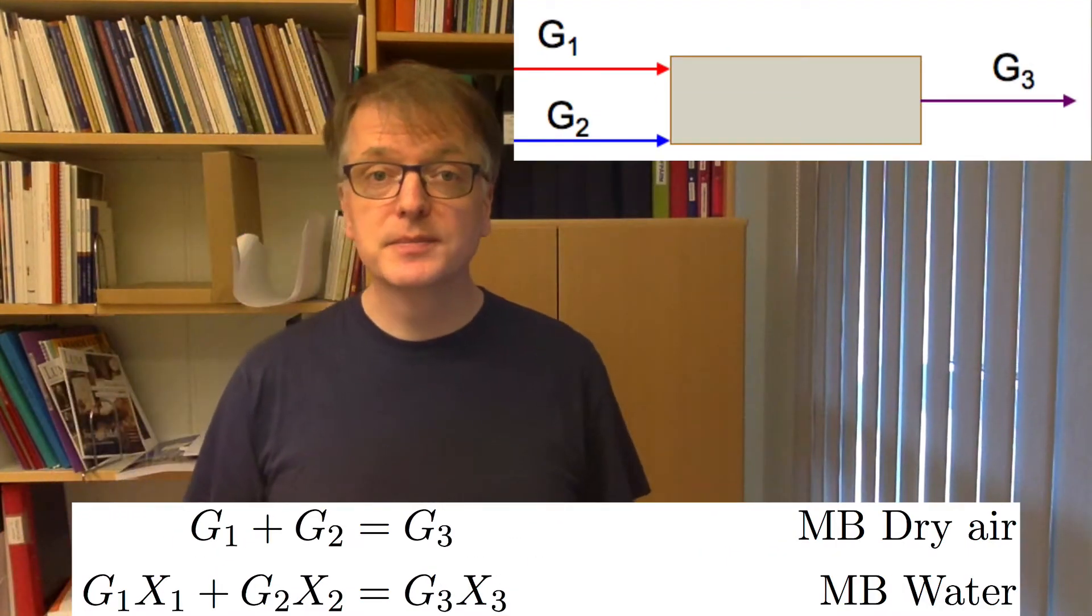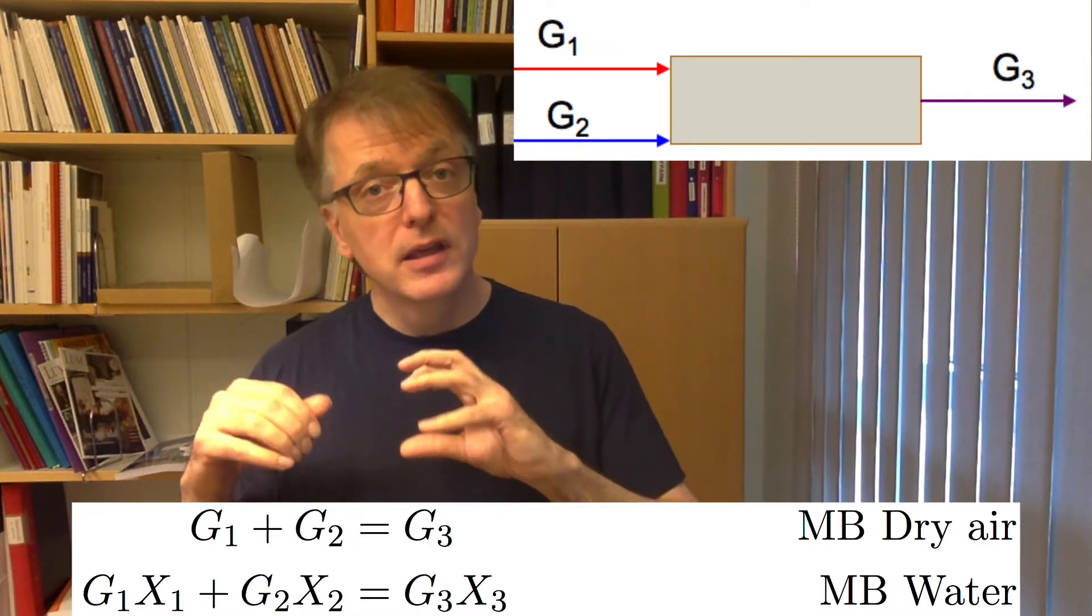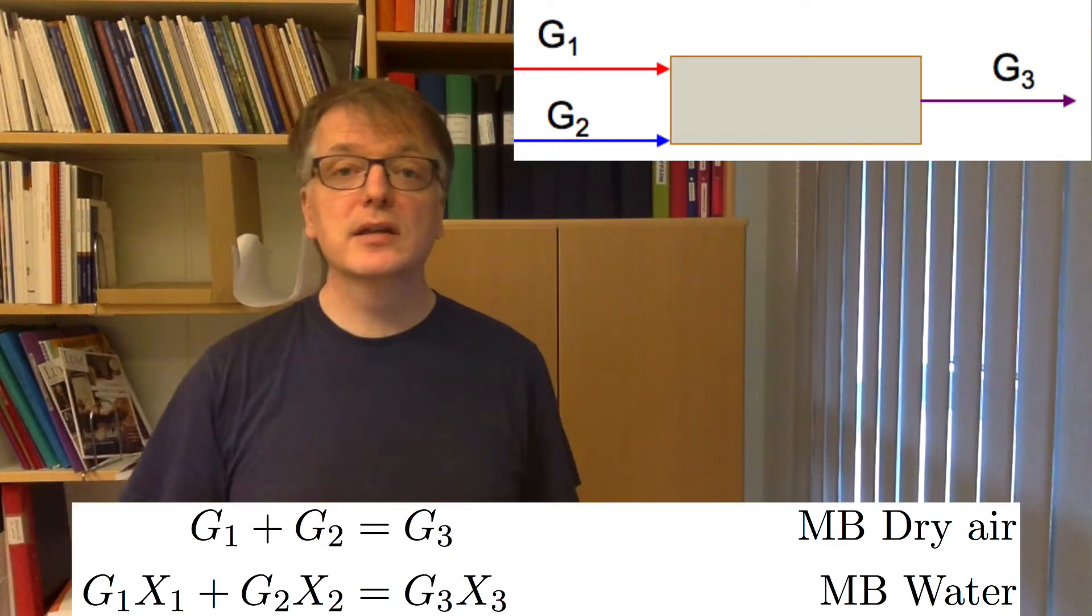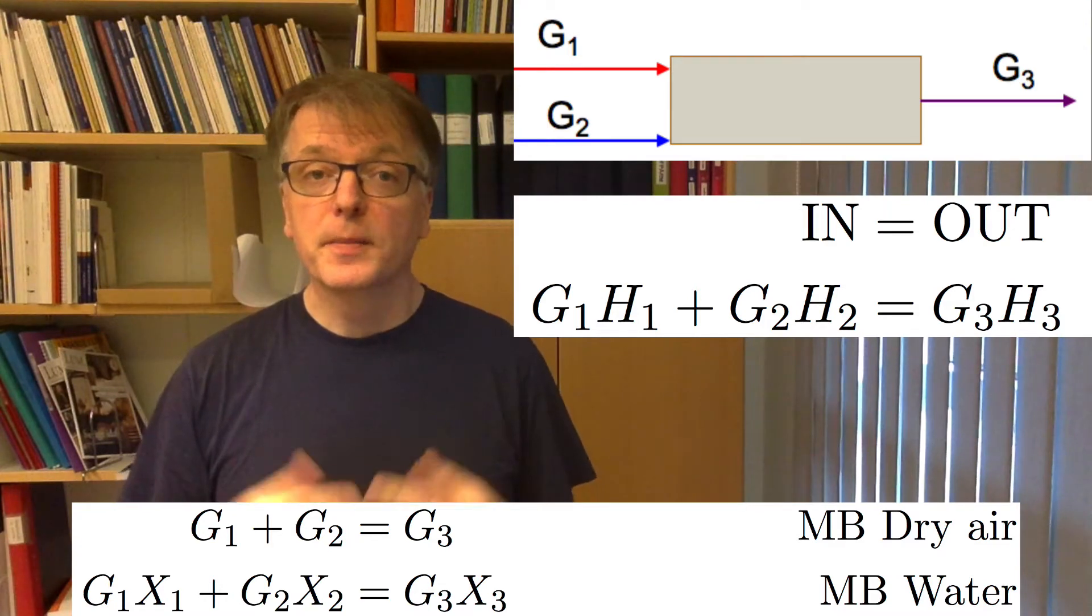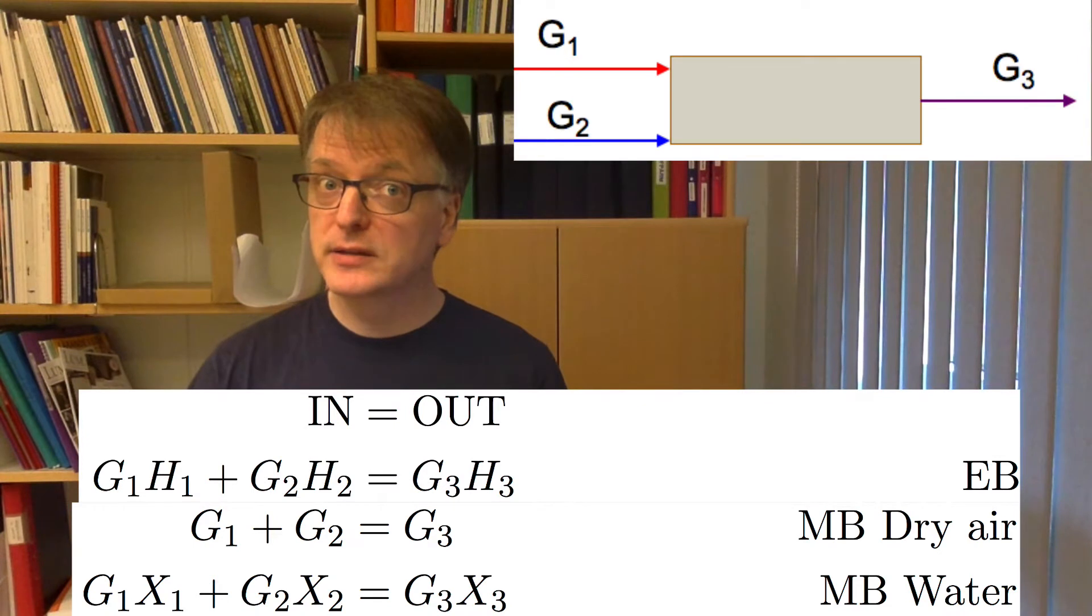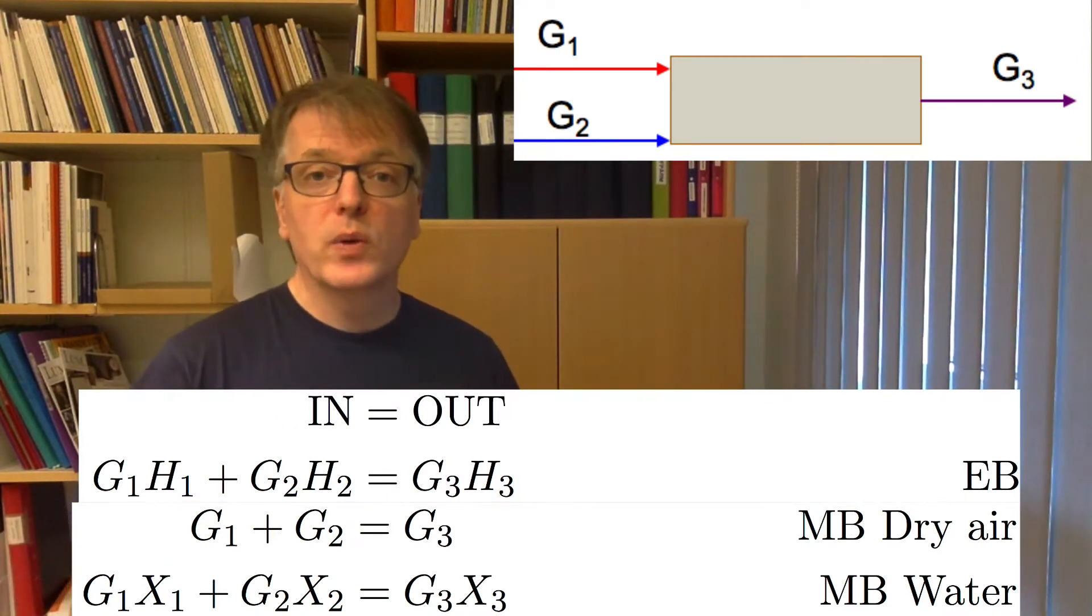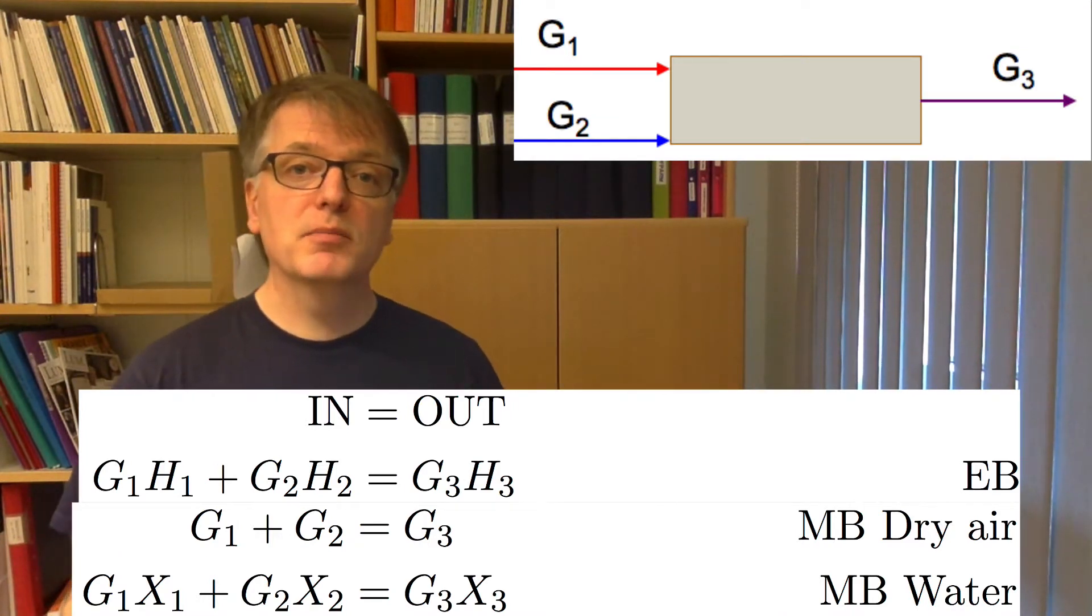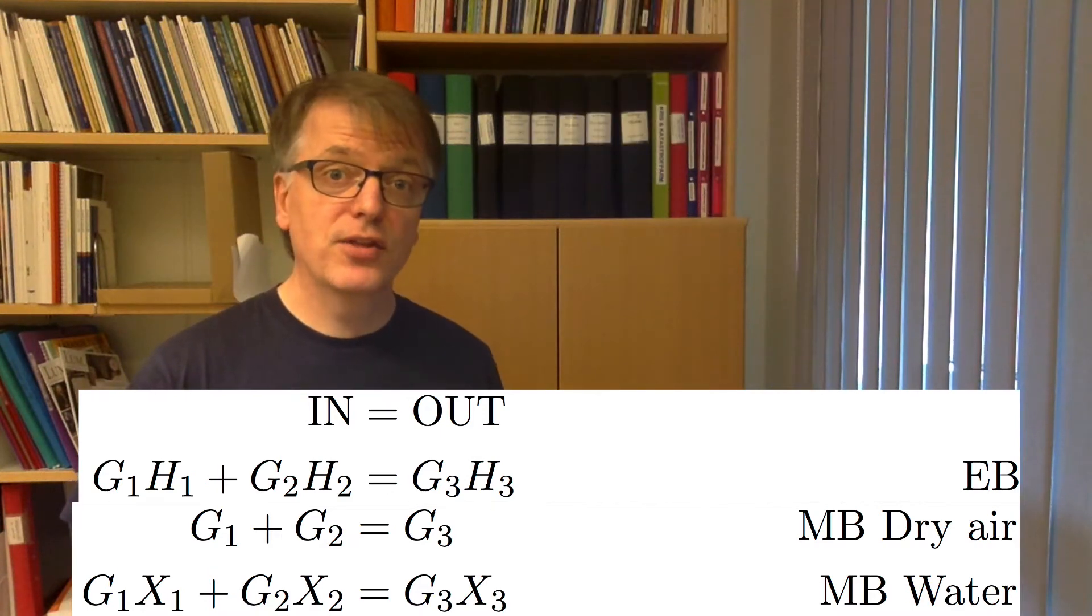What about the energy balance? Well we express the enthalpy h as kilojoules per kilogram of dry air. So if you multiply h with g you get kilojoules per second and that's a good unit for energy balance. Never use temperature as an energy balance unit because that simply doesn't work. So what does the energy balance become? Well it's simply g1 times h1 plus g2 times h2 equals g3 times h3.